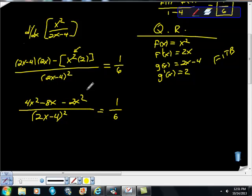Thank God some of this cleans up, so 4x squared minus 2x squared is 2x squared. So I end up with 2x squared minus 8x over 2x minus 4 quantity squared equals 1 sixth.